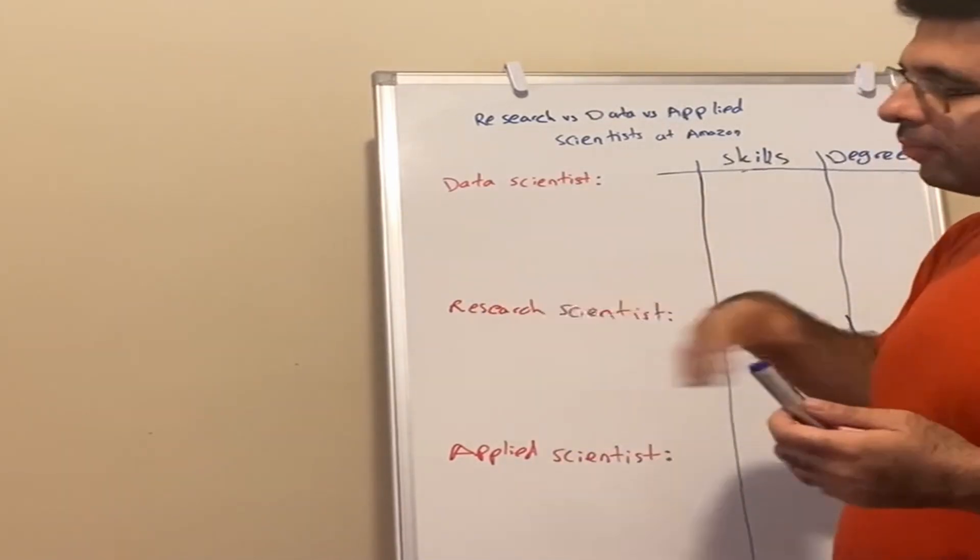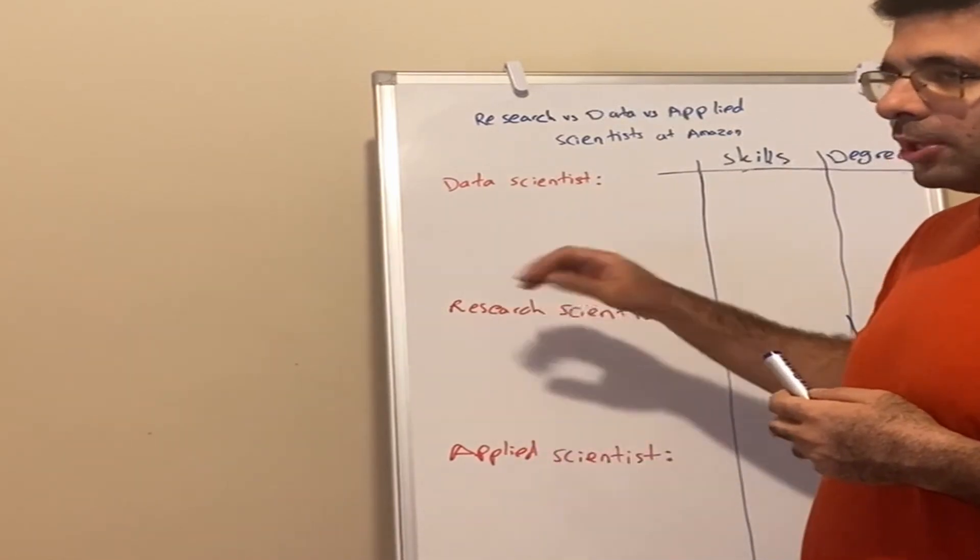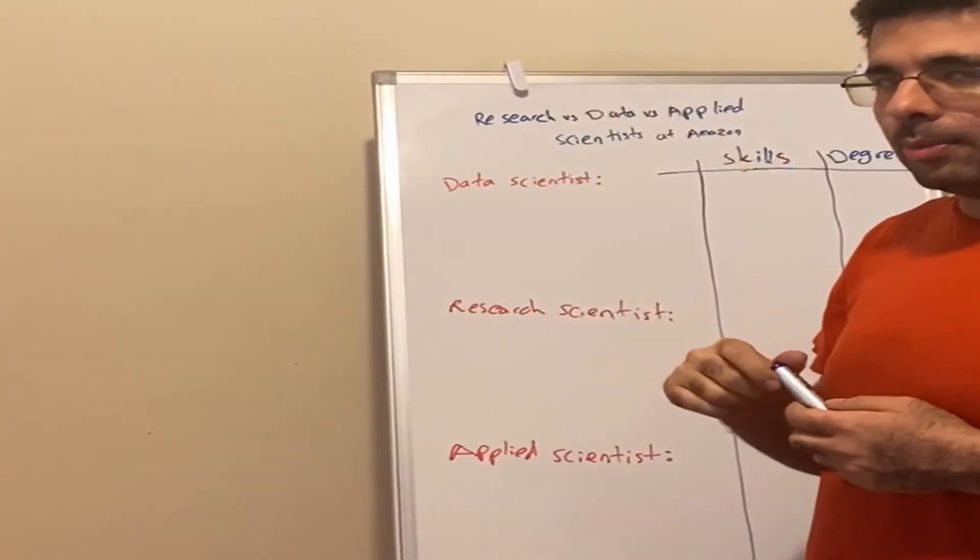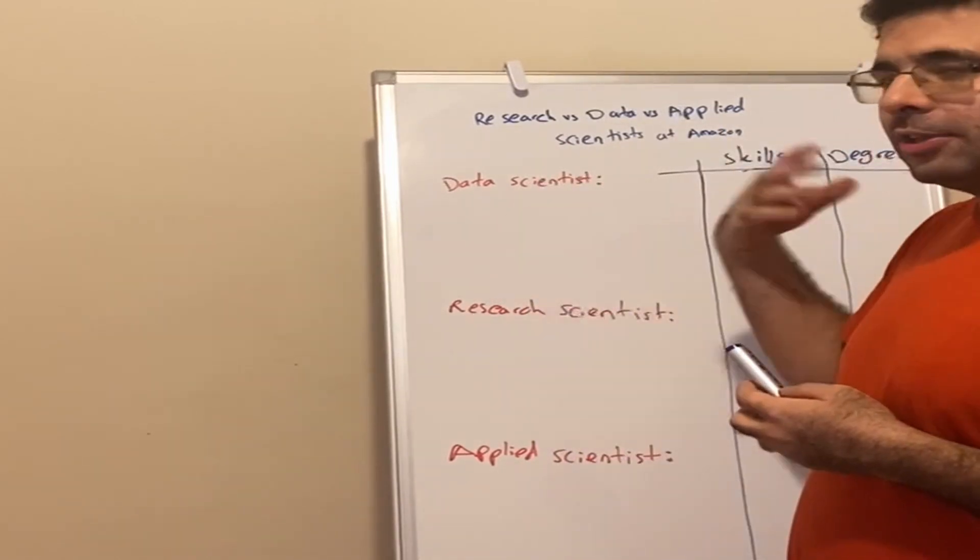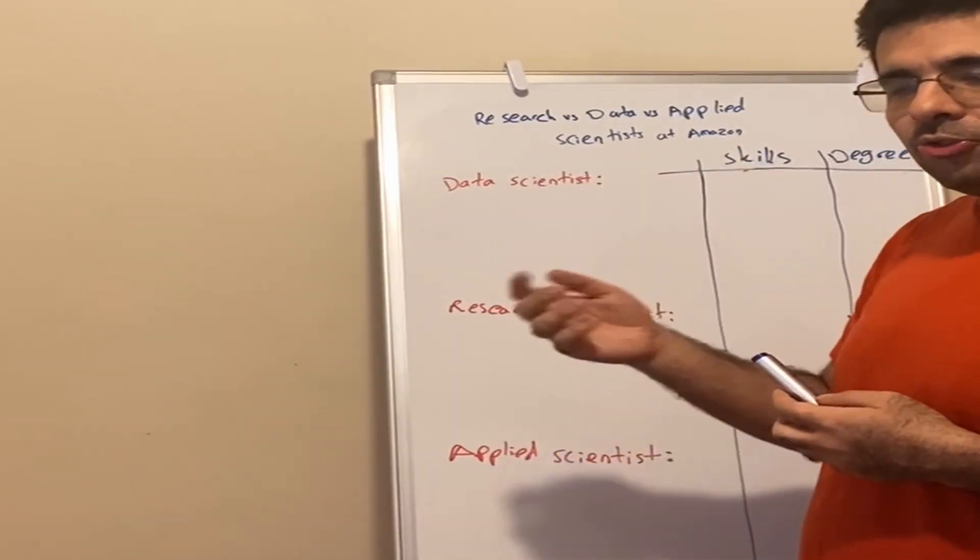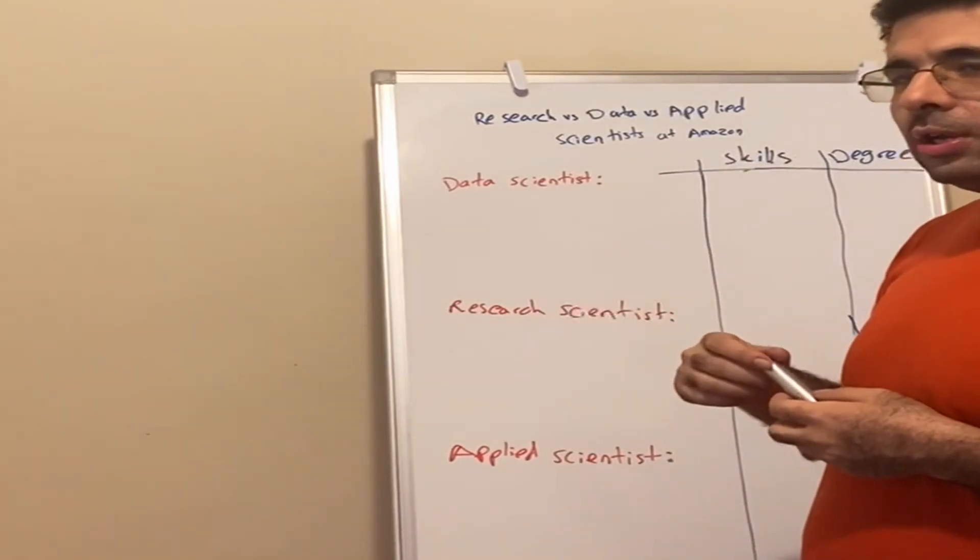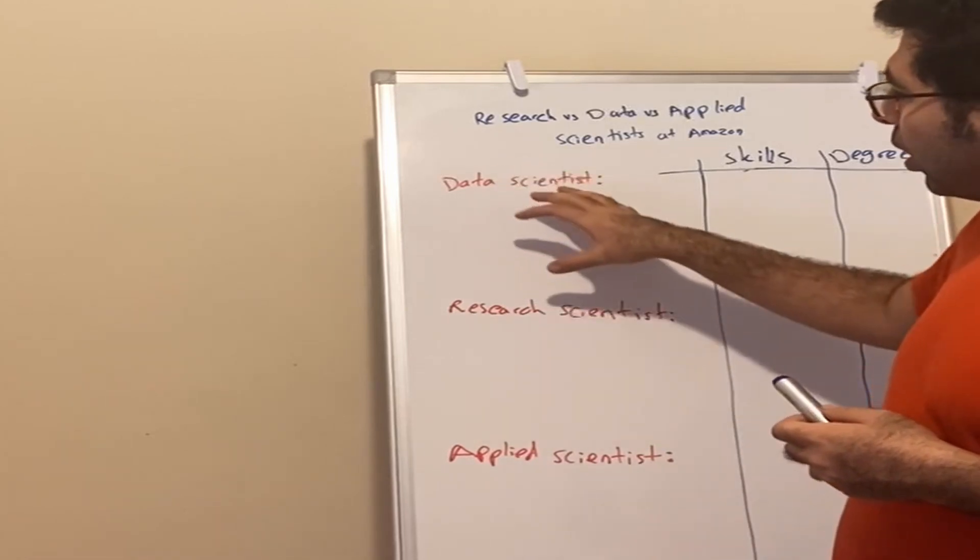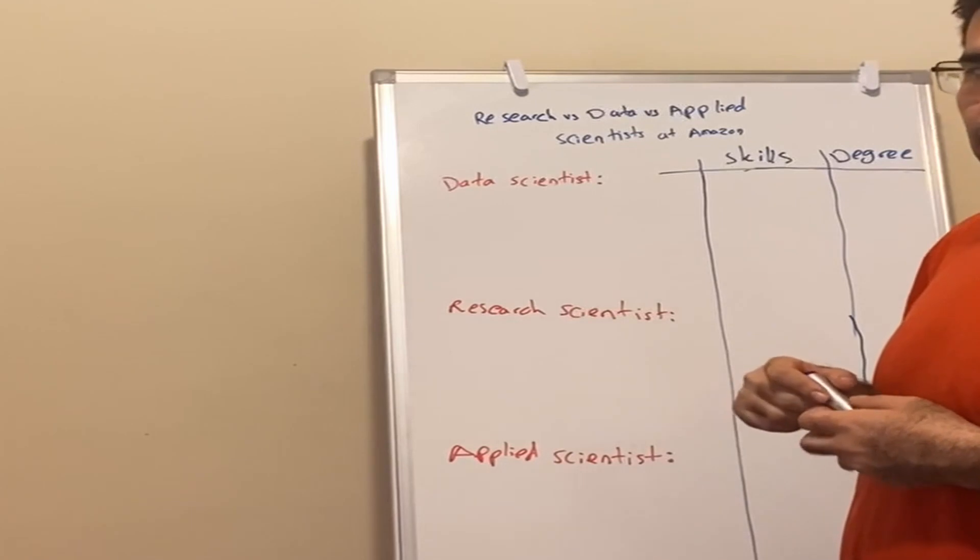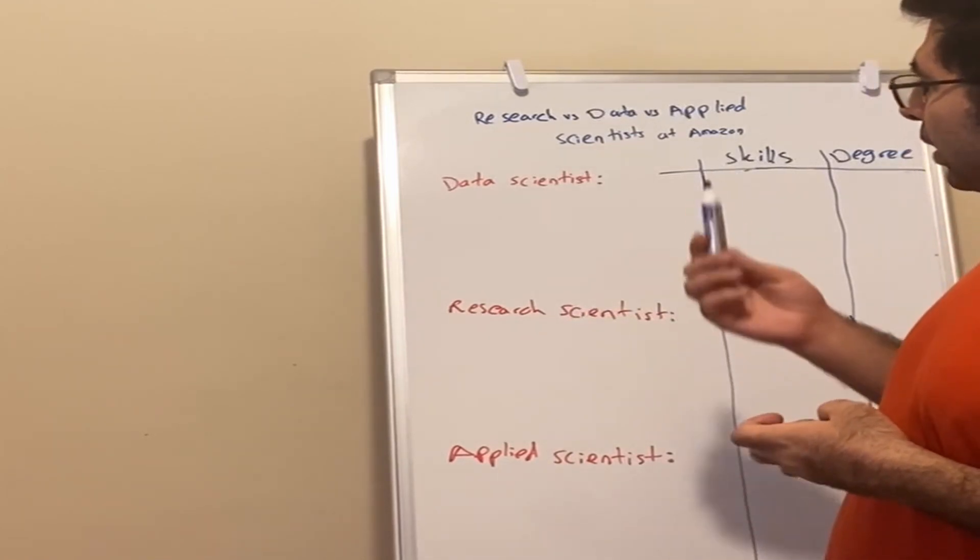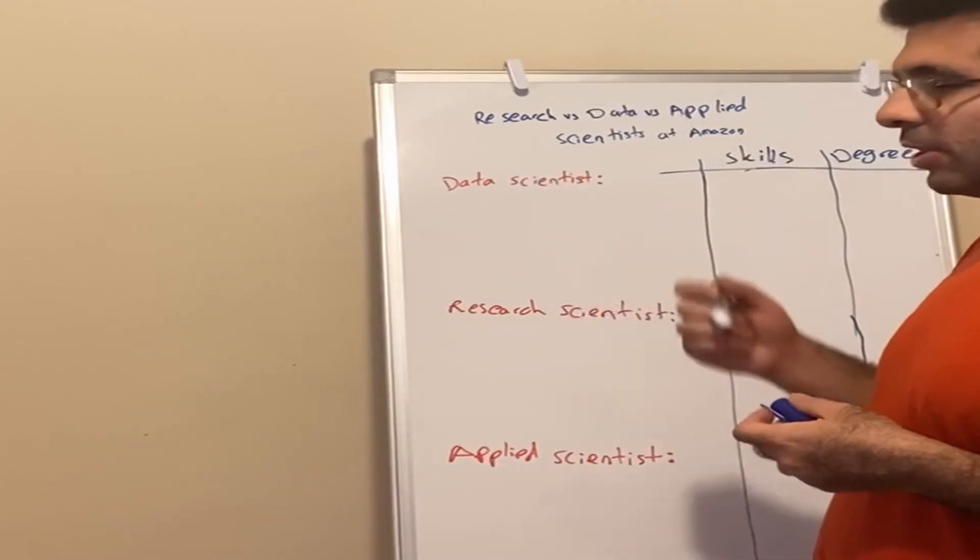They are the science job family. Of course we have economists too, but we're not going to spend time on that because they usually have PhD in economics. Then there are other job families at Amazon: data engineer, software developer engineer, product manager, machine learning engineer, solution architect. Now I want to focus on the science job families: data scientists, research scientists, and applied scientists. Let's start.